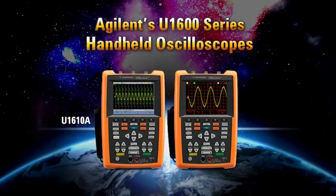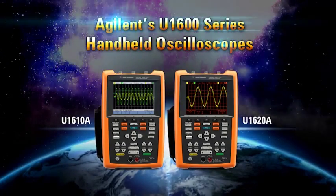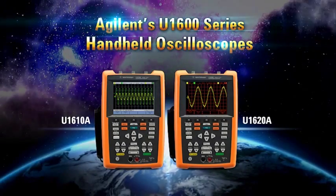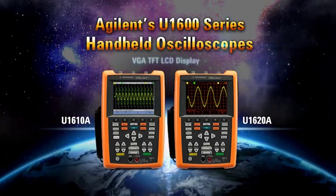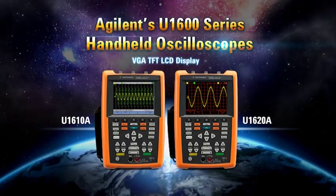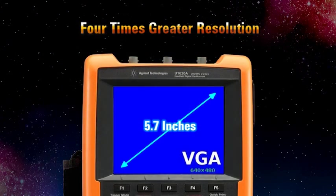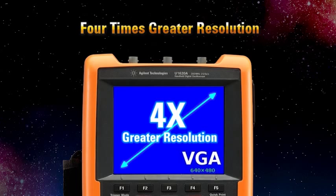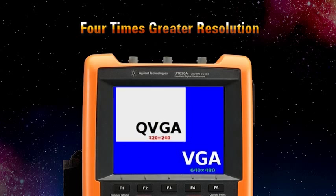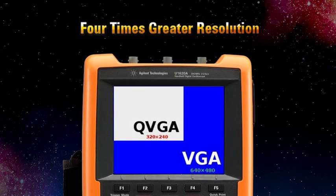The Agilent U1610A and U1620A are the world's first handheld oscilloscopes with VGA-TFT LCD display. This 5.7-inch full VGA-TFT display gives you four times greater resolution compared to what other handheld scopes in the market offer today.